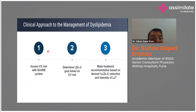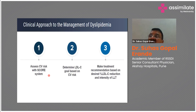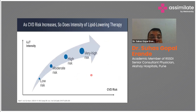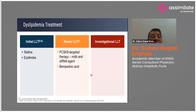To manage diabetic dyslipidemia, assess the cardiovascular risk score — Q-RISK is generally recommended in India. Determine the ideal LDL goal for that particular patient and then start diabetic dyslipidemia management. The higher the risk, the more robust the LDL lowering needs to be, so initiate lipid-lowering therapy.